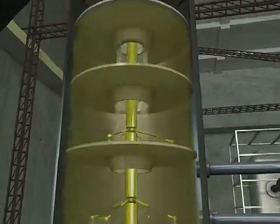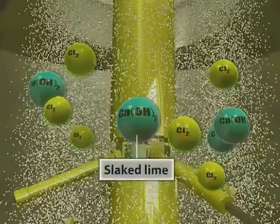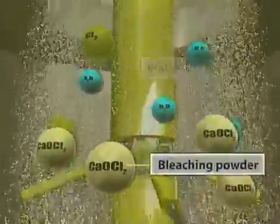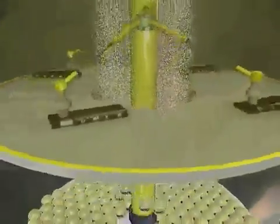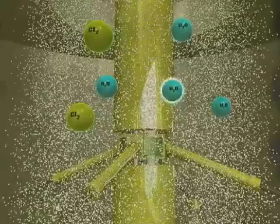The dry slaked lime, which is chemically calcium hydroxide, then chemically reacts with chlorine gas and forms bleaching powder and water. The bleaching powder is then collected in the barrel placed at the base of the tower.